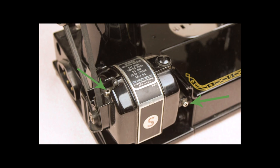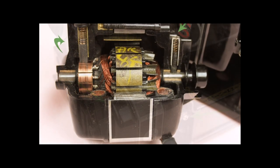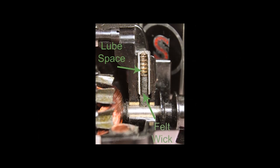The Featherweight motor has two lubricating ports, one on the top by the belt, and one on the back of the motor. Inside each port is a felt wick, as well as some space to hold the lubricant.